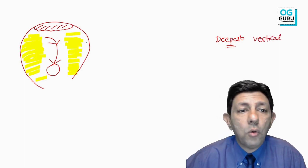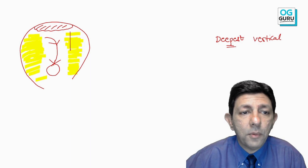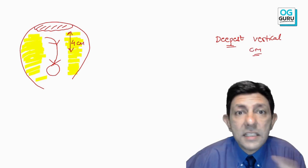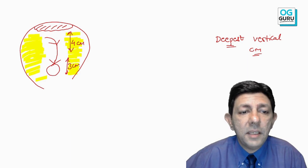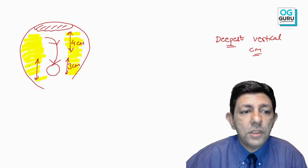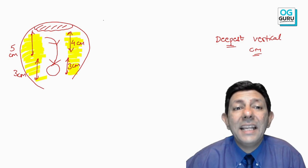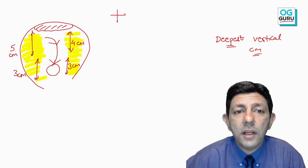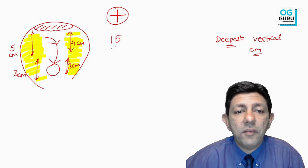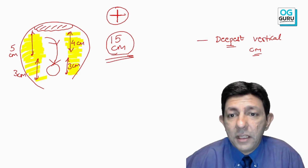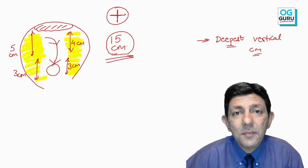In each quadrant we measure the deepest vertical pocket in centimeters. For example: quadrant one gives 4 cm, quadrant two gives 3 cm, quadrant three gives 3 cm, and quadrant four gives 5 cm. You add all four quadrant pockets together: 4 + 3 + 7 + 3 = 10 + 5 = 15 cm. So this patient's AFI is 15 centimeters.